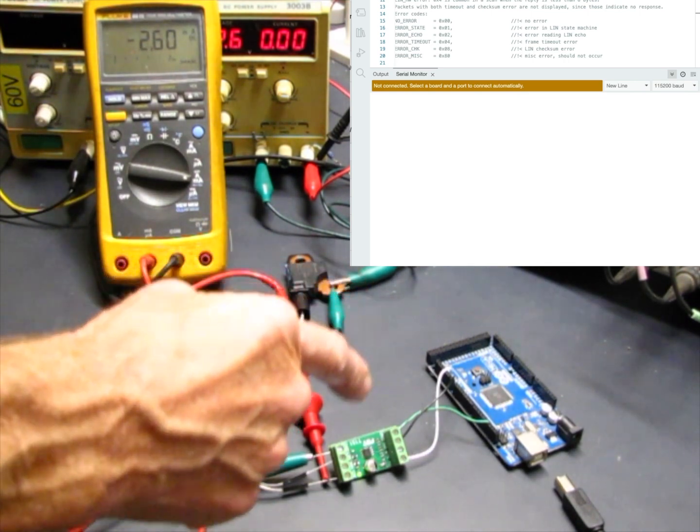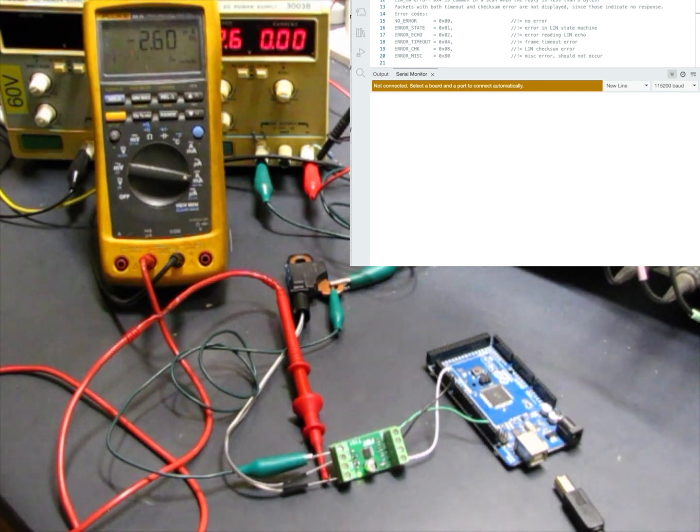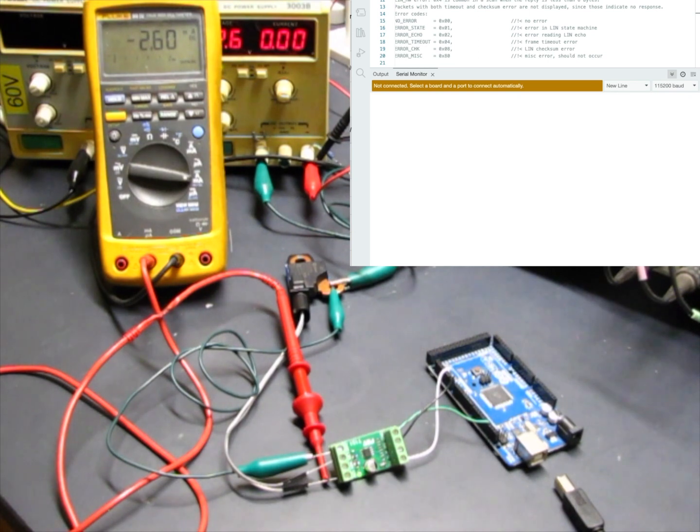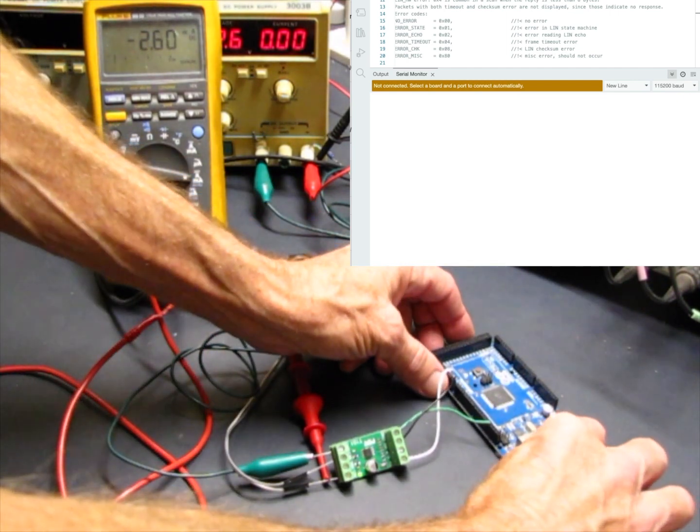It's hooked up to the ground pins and I believe that is TX3 and RX3 pins for the communication. And all this is covered in the Arduino code called LIN PID scan that I've put together and is offered up for free open source.